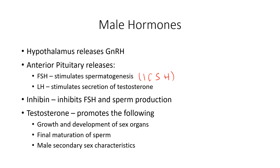LH causes the interstitial cells of the testes to secrete testosterone. So it's at puberty that we see this onset of sex cell production, and it never ends — a male can still produce sperm until the very last day of life. I also wanted to mention the hormone inhibin, produced in many locations around a male's and female's body. It will inhibit FSH if levels get too high and lower sperm production, maintaining sperm production within a narrow range. It does exactly as its name implies — it inhibits sperm production.